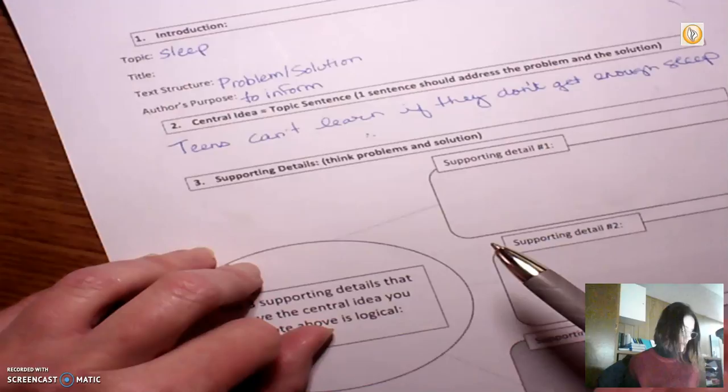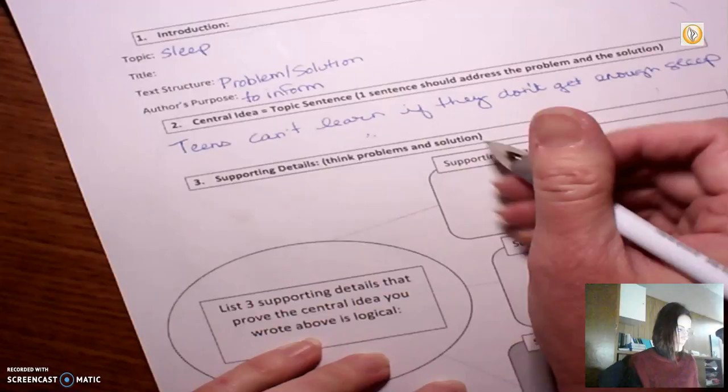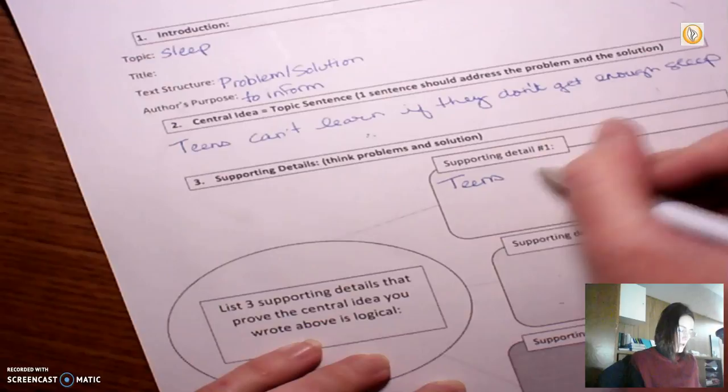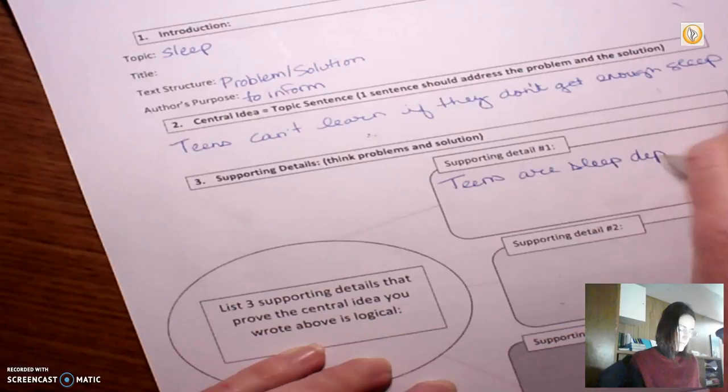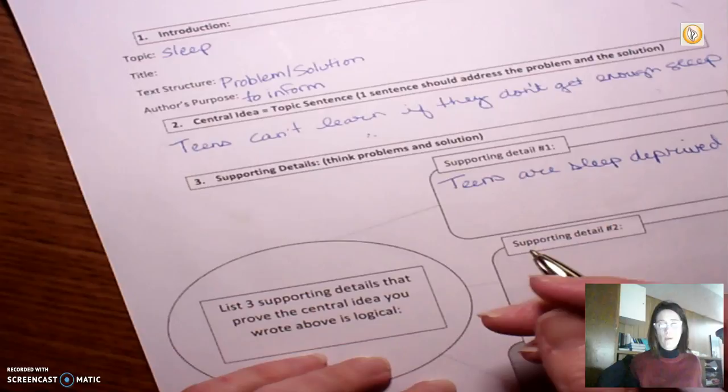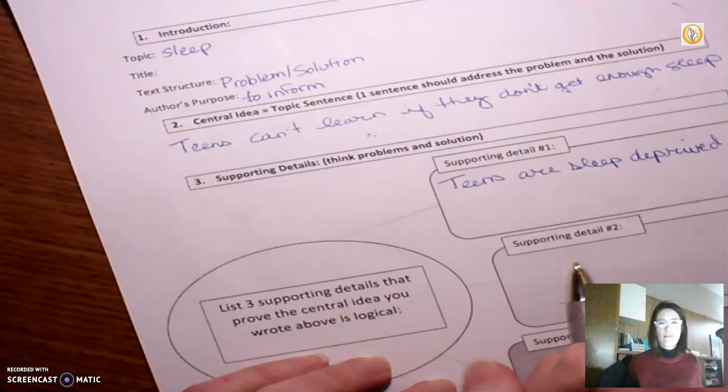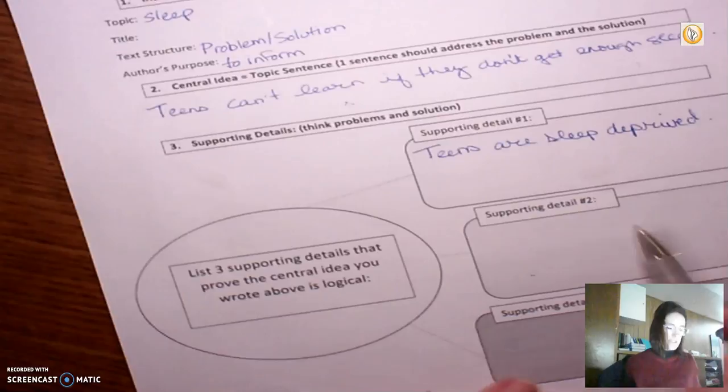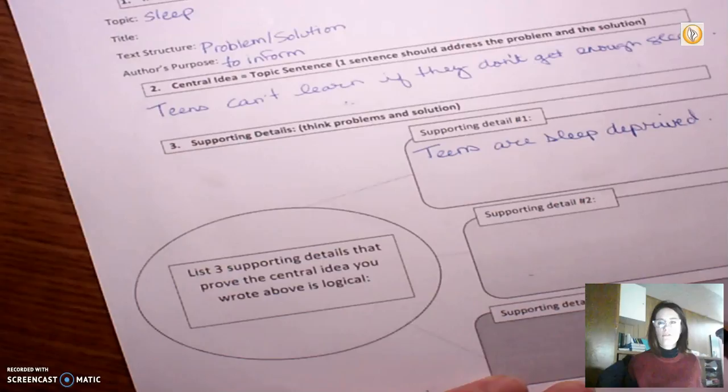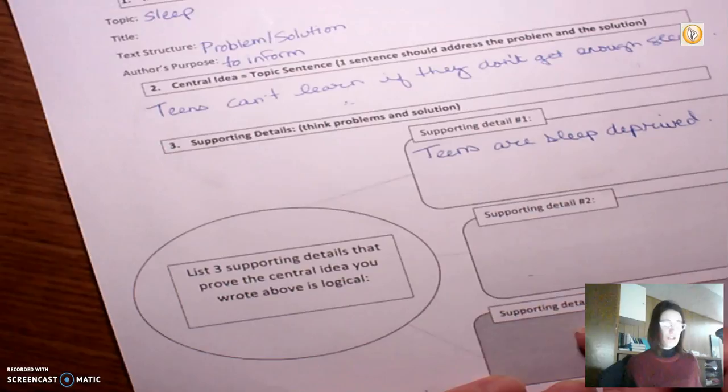All right. So on to our supporting details. I need to think about problems and solutions. So the problem is that teens are sleep-deprived. We get a whole lot of that in the article. We know that because of phase delay when they should be going to bed, most teens are awake. They don't get to sleep in because they have to go to school right away in the morning. And there's also some issues with after-school activities and the demands of family and social time. So I think for supporting detail number two, I'm really going to focus on building my case that sleep is absolutely necessary for learning. And I'm going to return to that really, really technical section of the article where it talks about the types of sleep that a teenager needs in order to learn effectively.